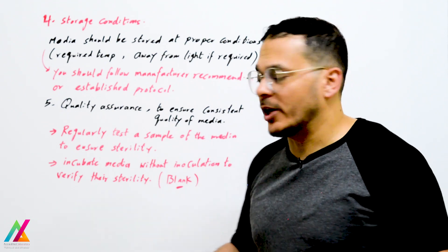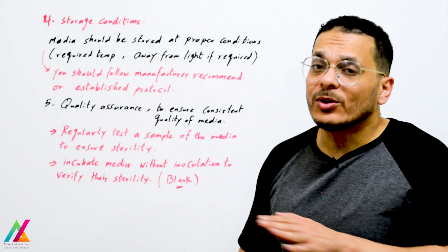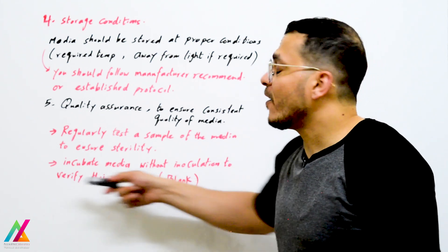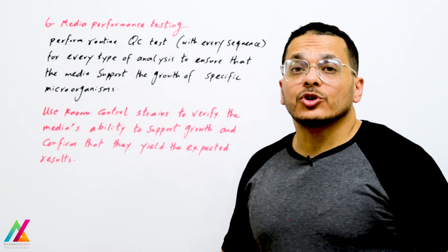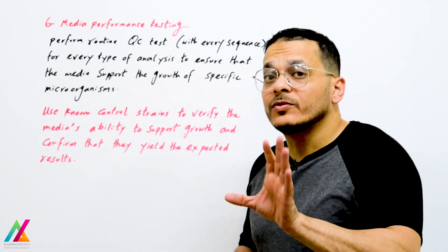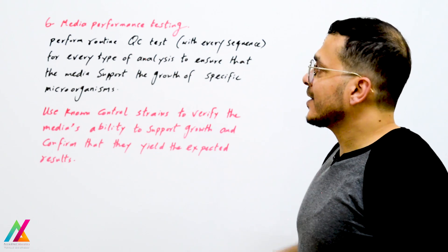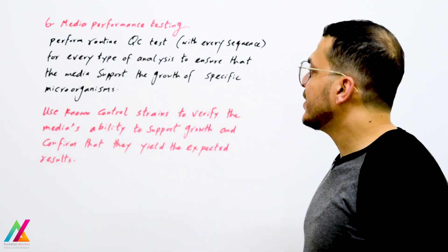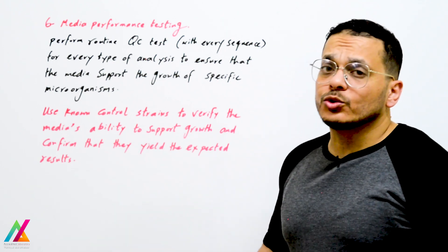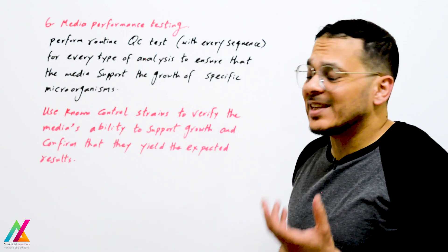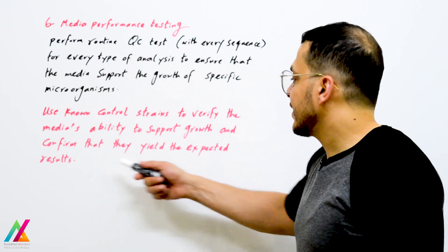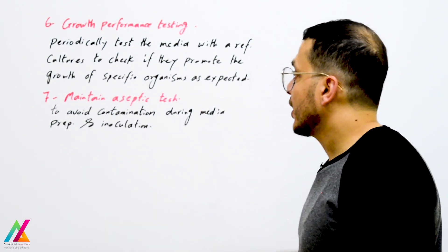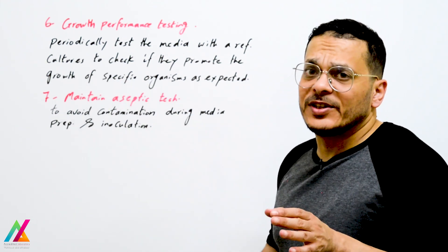To ensure consistency and quality, regularly test a sample of the media to ensure sterility by incubating media without inoculation. You should also ensure the performance of the media — it must support the growth of the target organism. Perform routine quality control tests with every sequence for every type of analysis using non-control reference strains to verify the media's ability to support growth and confirm expected results.